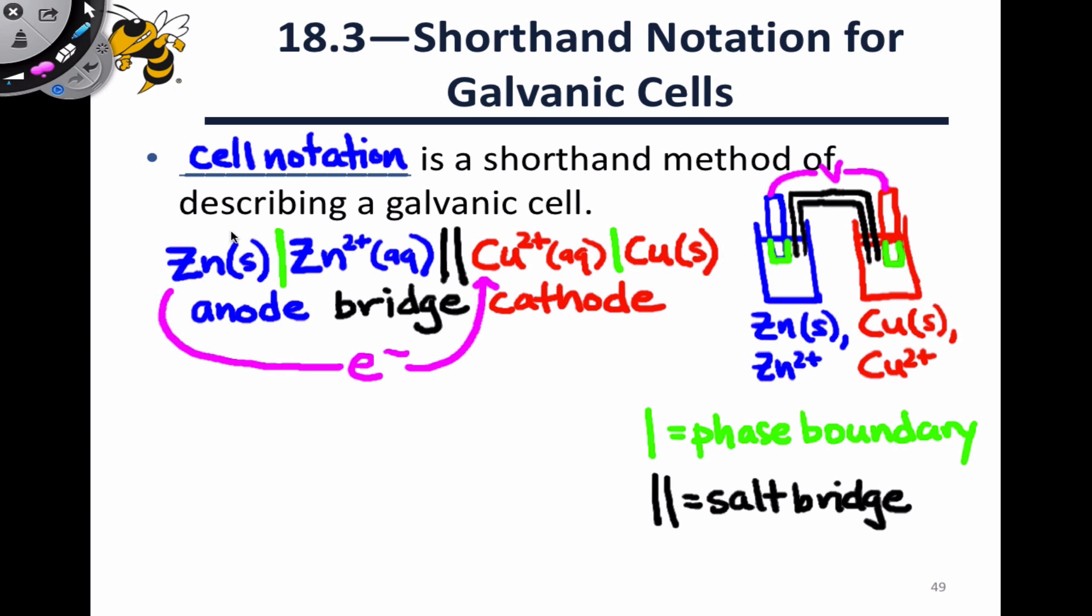And notice that the electron transfer here is between the reactants. So zinc is transferring two electrons to Cu2+, which is why I've linked the reactants here. But what we can say in general is that electrons will always flow from left to right from the anode to the cathode in cell notation.